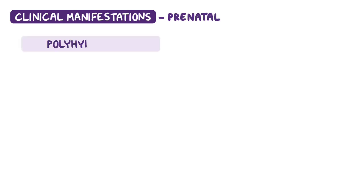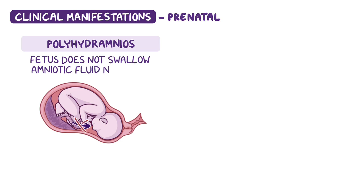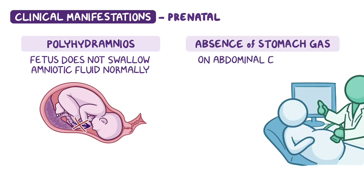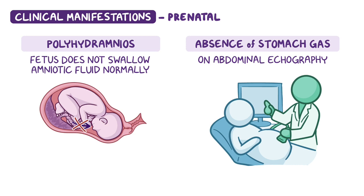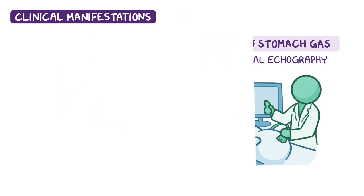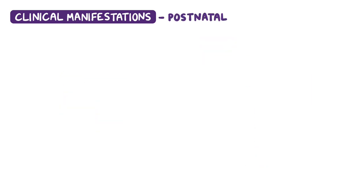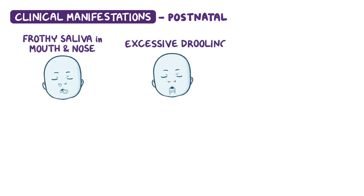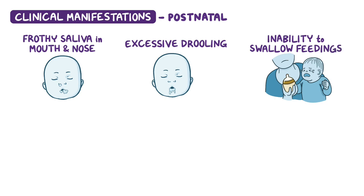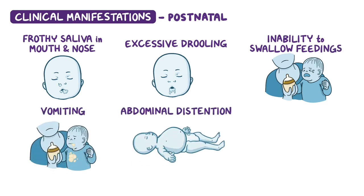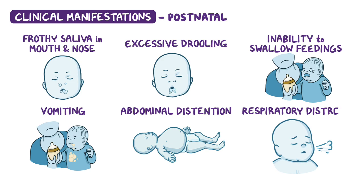The most frequent clinical manifestations of esophageal atresia in the prenatal period are polyhydramnios, which happens because the fetus does not swallow amniotic fluid normally, along with the absence of stomach gas on prenatal abdominal echography. Postnatal symptoms and signs include frothy saliva in the mouth and nose, excessive drooling, inability to swallow feedings, vomiting, abdominal distension, and in severe cases, respiratory distress.